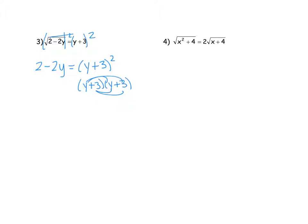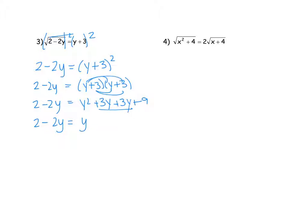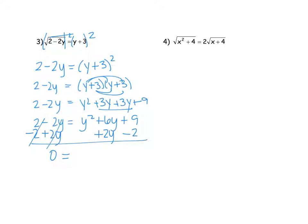So y times y gives me y squared, y times 3 gives me 3y, 3 times y gives me another 3y, and 3 times 3 gives me 9. We bring down everything else and combine like terms — 3y plus 3y is 6y. Anytime you have a quadratic equation with a y squared, you always want to get it equal to 0 so we can factor. So I subtracted 2 and added the 2y, giving me 0 equals y squared plus 8y plus 7.